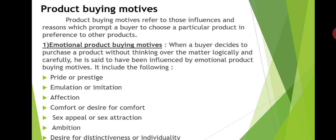Next, ambition. For instance, it is ambition that makes many people who do not have the facilities to pursue their college education through regular colleges pursue their education through correspondence courses due to lack of finance. For example, if a student wants to do education but does not have enough money, he pursues his education through correspondence courses instead of regular classes. This is what ambition means as a buying motive.